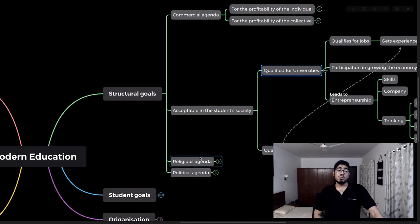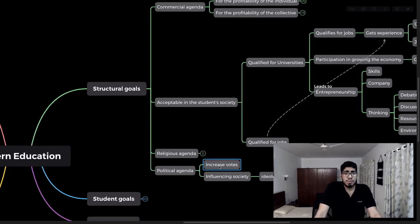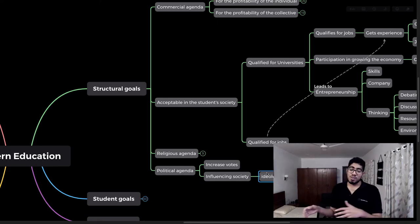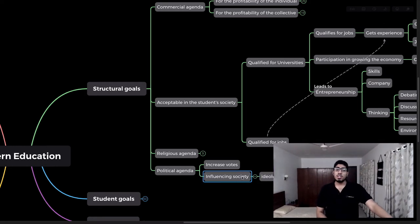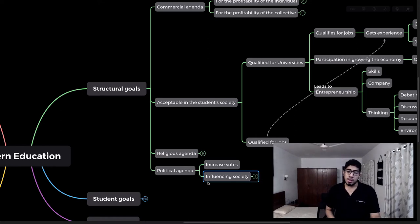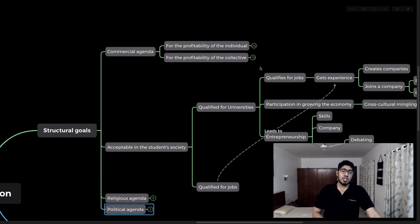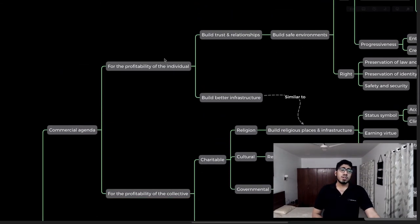Universities also have religious and political agendas. Certain educational institutions are basically part of some political party — especially in communist systems, where the agenda is essentially 'vote for us and we'll give you free education.' They also influence society through ideological lessons. In Hitler's time, for example, political agenda was the biggest agenda of schools in Germany.